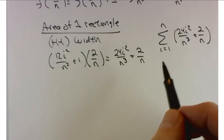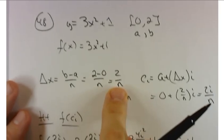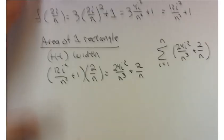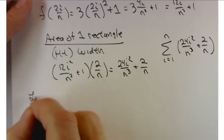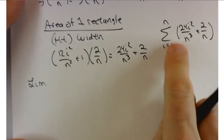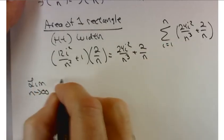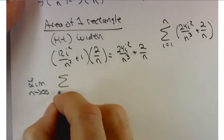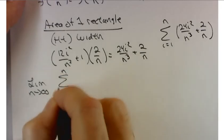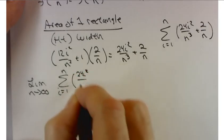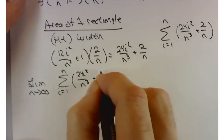Well, you take the limit as n approaches infinity. As n approaches infinity, the width of your rectangles is going to go to 0. And the error that you make in this approximation is also going to go to 0. So we want to calculate the limit as n approaches infinity of this expression.